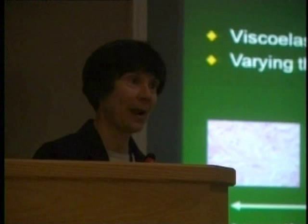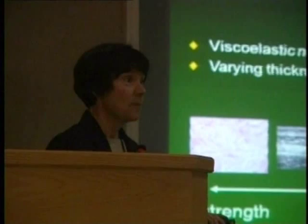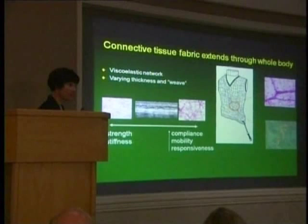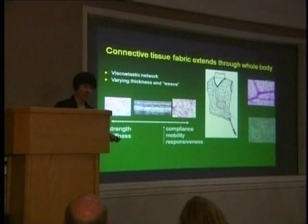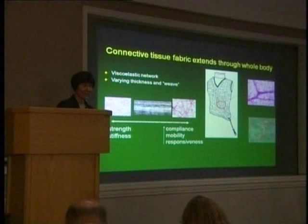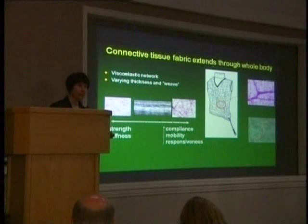Obviously, the connective tissue is trying to establish the correct balance throughout this whole network — we want strength, but we also want flexibility. We want both. Now, what are the other important things? Well, this connective tissue matrix is not just connective tissue — it has inhabitants. The inhabitants of connective tissue are blood vessels, sensory nerves, motor nerves, and also a lot of immune cells — macrophages, mast cells, all kinds of things. It's likely that these blood vessels and sensory nerves are affected by what's going on around them. We know they're very sensitive to mechanical forces.